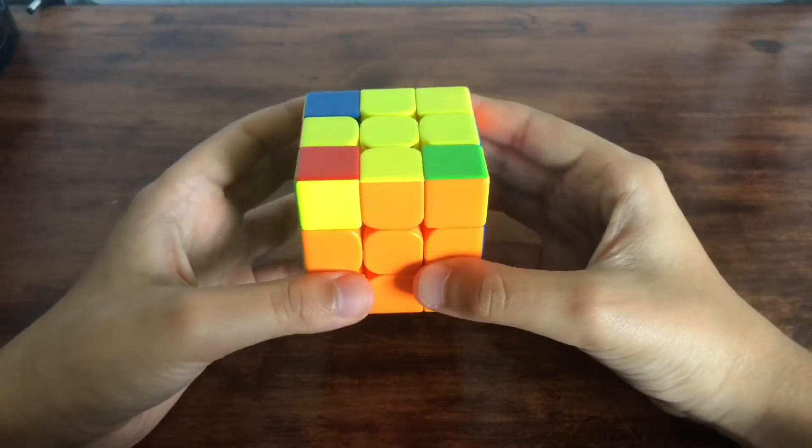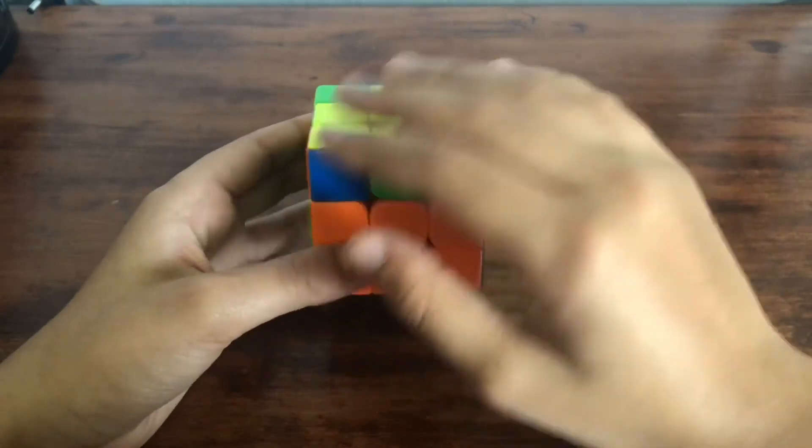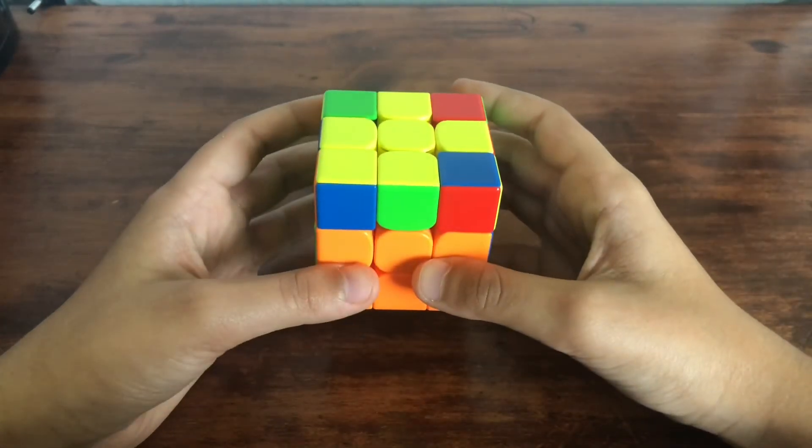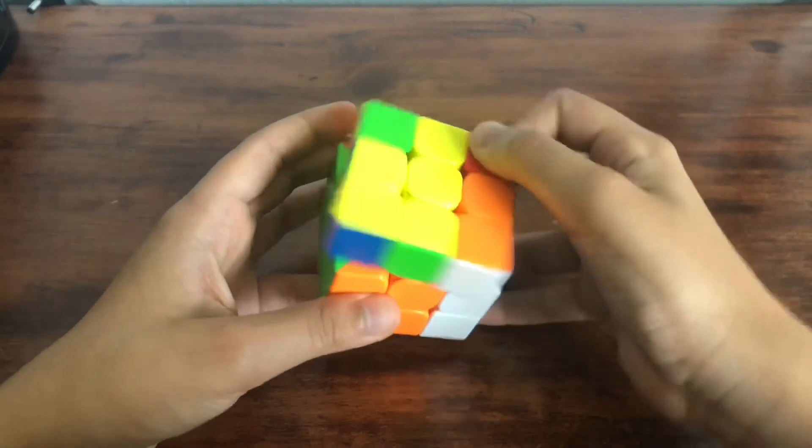Now you could also have this one last thing where when you hold it like this, you see you don't have anything facing here. So what you can do is you can hold it like this without the yellow here and you do it once.